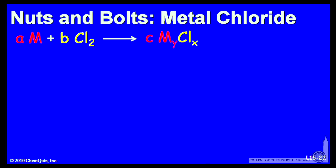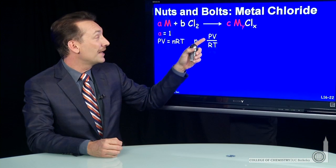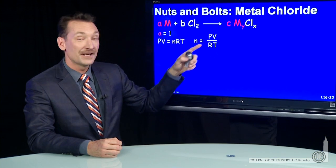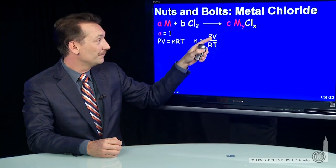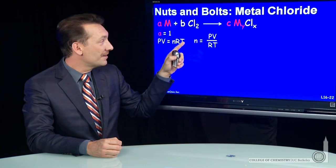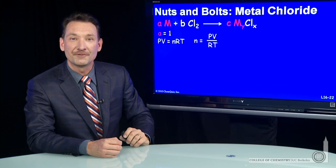Here's the expression again. A is the number of moles of metal, I know that's 1. B, I'm going to solve for the moles of chlorine used using the ideal gas law. Solve for n. The number of moles is PV over RT. I know the pressure, volume, and temperature. I know how many atmospheres of chlorine were consumed, the volume, and the temperature. That'll tell me how many moles of chlorine were used.